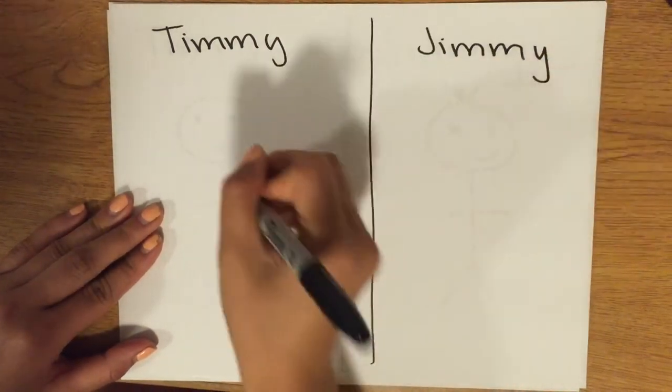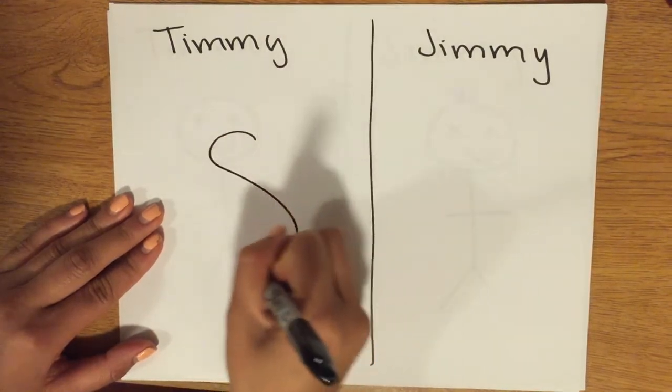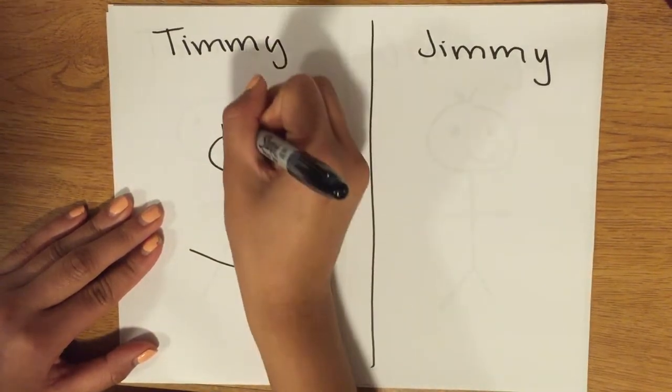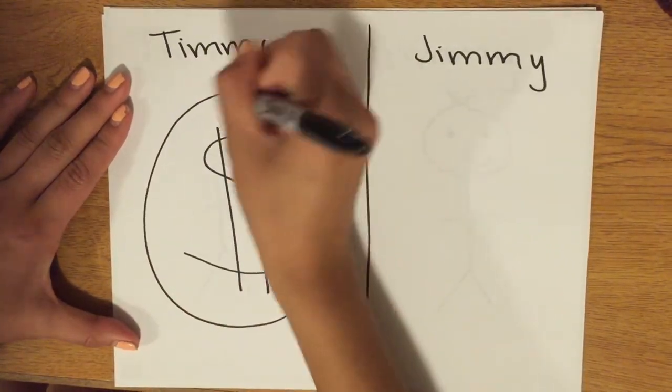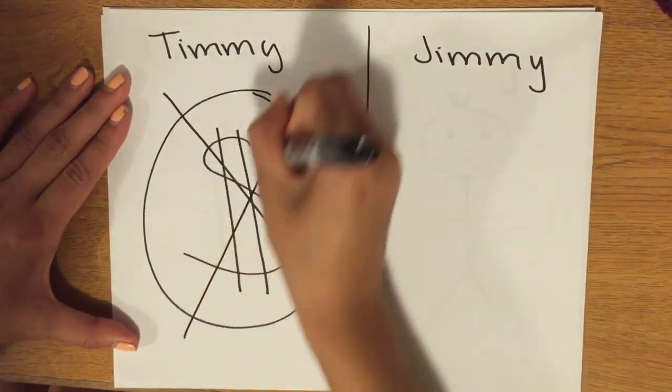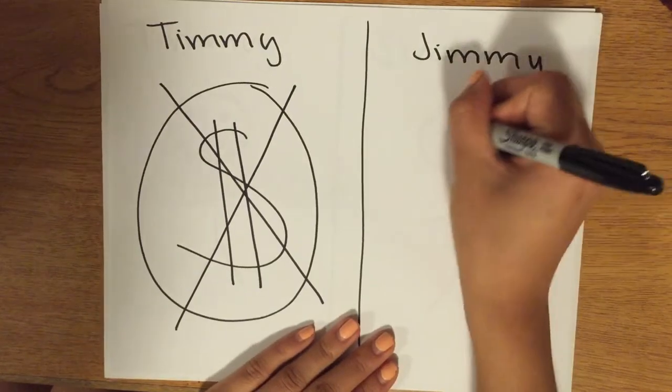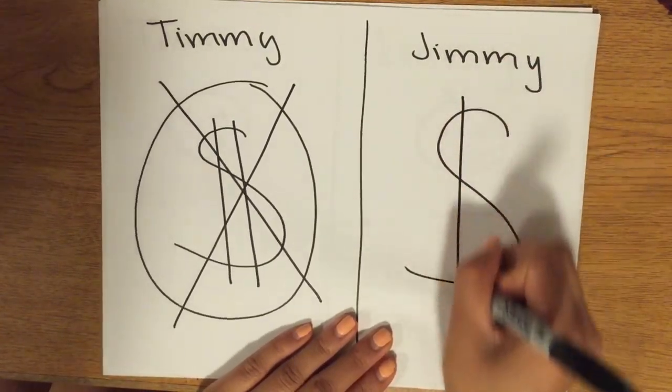Timmy's public school is overcrowded, underfunded, and does not have the best teachers. The value of the education he is getting at this public school is not as good as Jimmy's private school education.